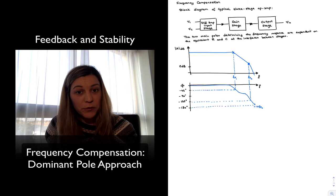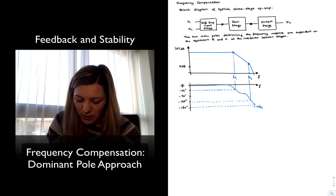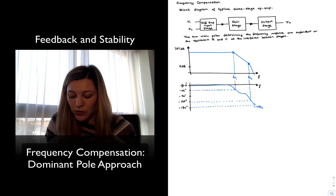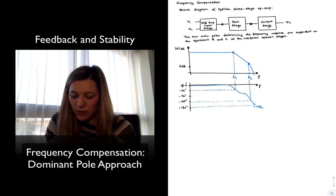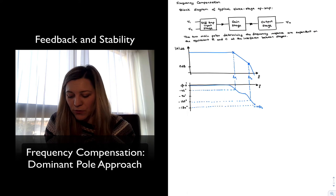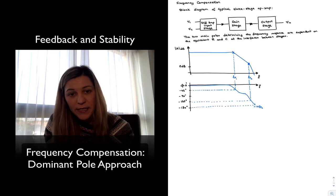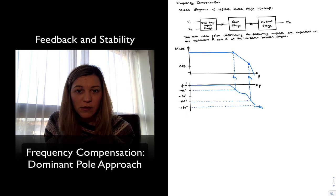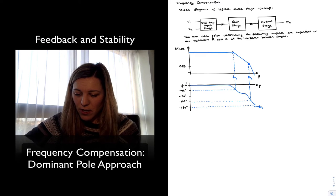As for the phase, in the passband region it is going to be zero degrees. By the time you hit the first pole, it will be at minus 45 degrees, decreasing from zero to negative 90 degrees between one-tenth and ten times the first pole frequency. It then sits at negative 90 degrees until about one-tenth of FP2, where it starts decreasing again, hitting negative 135 degrees at FP2 and going all the way to negative 180 degrees at ten times FP2. That is the standard Bode plot behavior for a two-pole system.